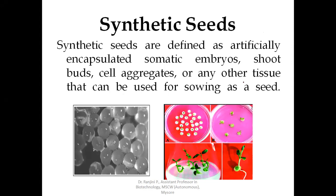Despite the successful sowing of in vitro produced somatic embryos directly into soil, research is now going on in sowing these synthetic seeds or artificial seeds. Synthetic seeds are otherwise called as artificial seeds. Here, the mature somatic embryos are covered by alginate, a chemical which contains some nutrients as the replacement for endosperm.